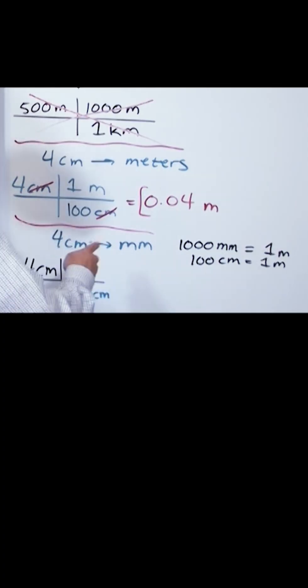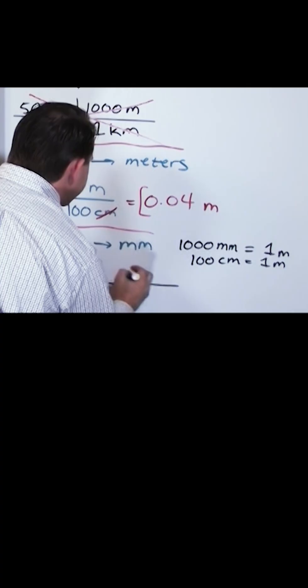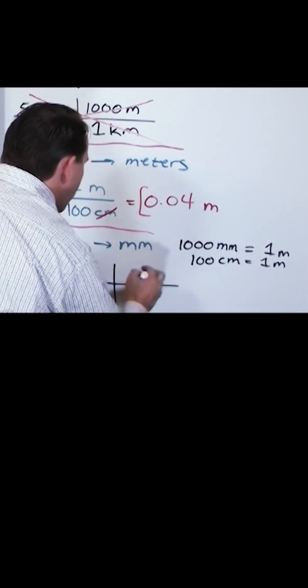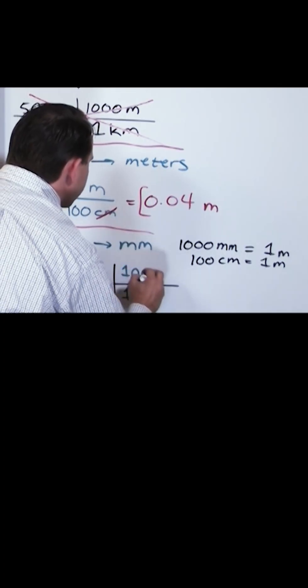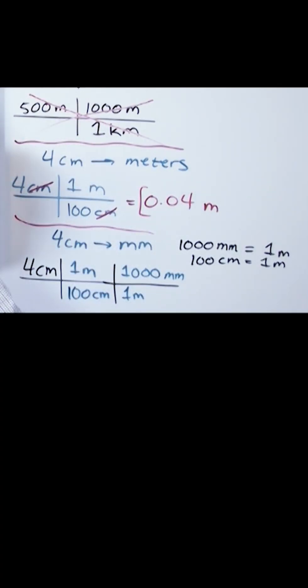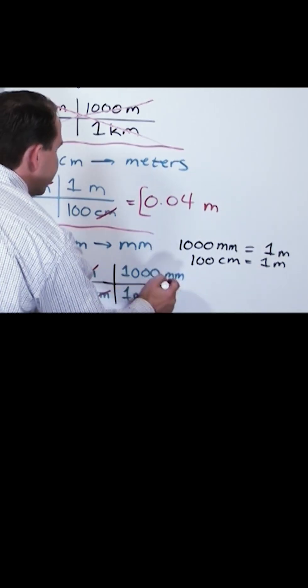If you write it this way, 100 centimeters in one meter, I can continue this as many times as I need. One meter is 1000 millimeters. Right here, centimeters cancels with centimeters and meters also cancels with meters.